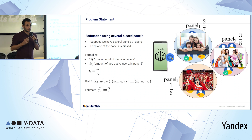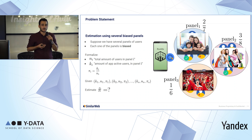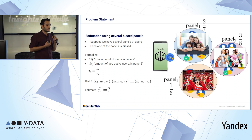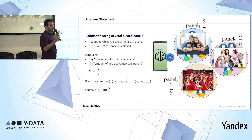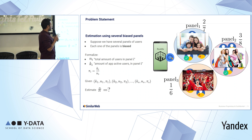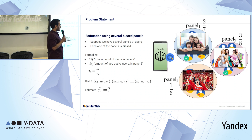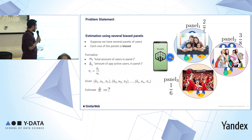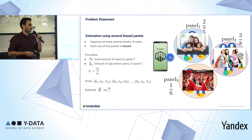Let's formalize it a bit further. We have the total amount of users for each panel, denoted by n, and k is the amount of app active users for each panel. We define pi as the proportion between k and n, which is obviously less than one. So given s panels, we need to come up with pi tilde — the percentage of app active users.